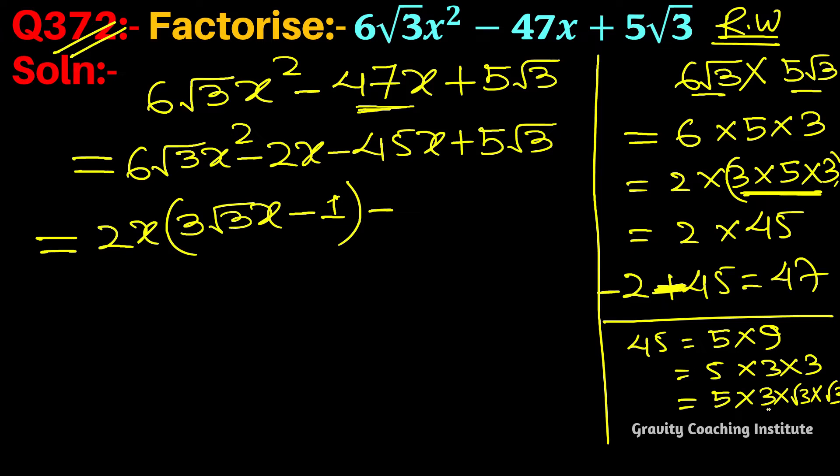If we write 5√3, this is 45. 5√3 is common from this term, so we write 5√3 is common, 3√3x...